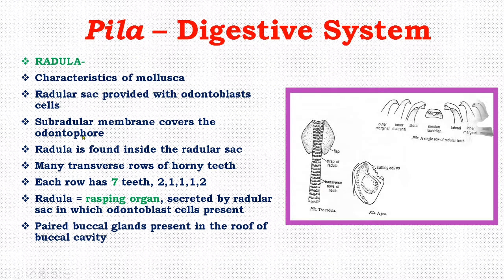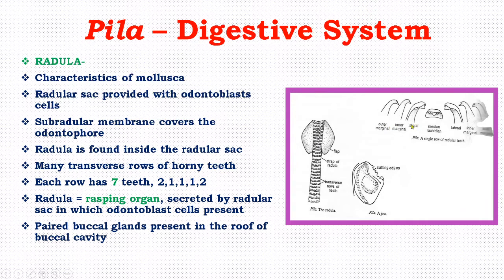The radula is made up of many transverse rows of horny teeth, with each row having seven teeth: two marginal teeth (one inner, one outer), one lateral tooth on each side, and a central rachidian tooth in the middle — giving the formula 2-1-1-1-2 (outer marginal, inner marginal, lateral, and median rachidian). The central rachidian tooth is roughly rectangular and lateral teeth are rhomboidal in shape.